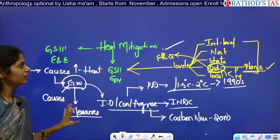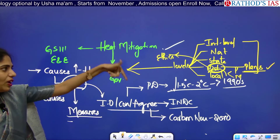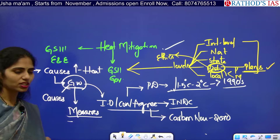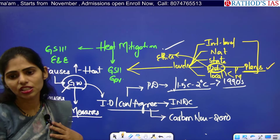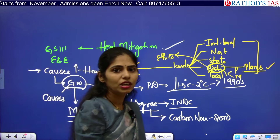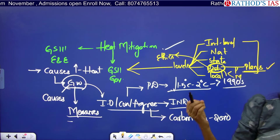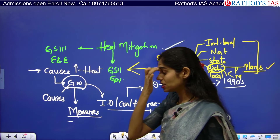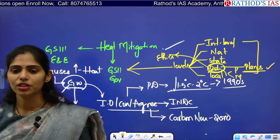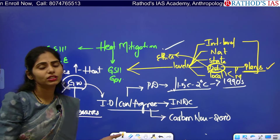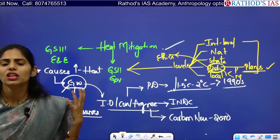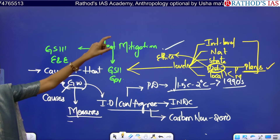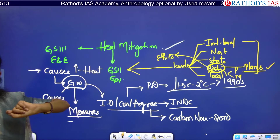You need to collect points about what measures can be taken at each level. At the international level, we have COP, CBD, and the United Nations Summit for the Future, which also talks about climate change. Our Environment Ministry Secretary also says it is not just about CO2 emissions — we have to focus on sustainable livability.